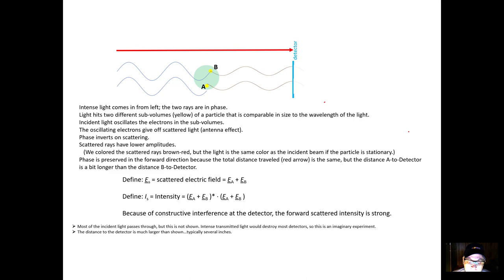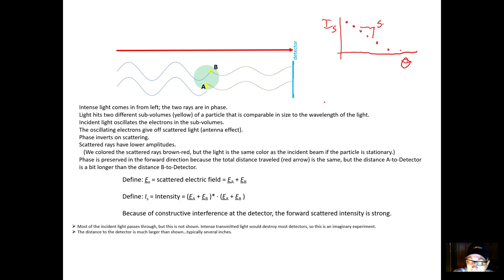Now moving to a bigger particle: if I plot scattered intensity as a function of scattering angle theta, it will go down in some way. That slope lets us assess size, and the nature of the curve — they're not exactly straight lines — gives us size and sometimes shape. Where this comes from is how the light interacts with the sub-volumes in the particle.